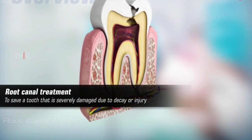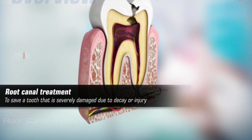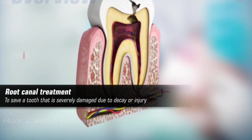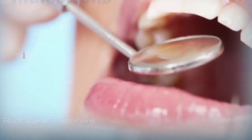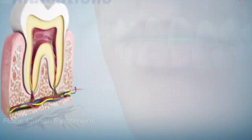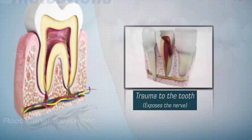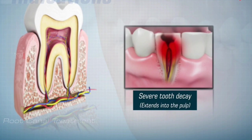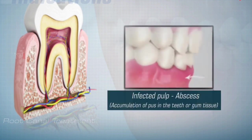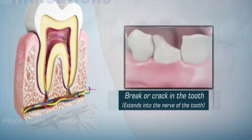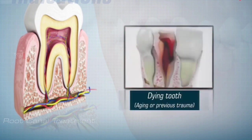The aim of root canal treatment is to save a tooth that is severely damaged due to decay or injury. The most common indications include trauma to the tooth that exposes the nerve, severe tooth decay that extends into the pulp, infected pulp that causes an abscess, an accumulation of pus in the teeth or gum tissue, a break or crack in the tooth that extends into the nerve, and to save a dying tooth due to aging or previous trauma.